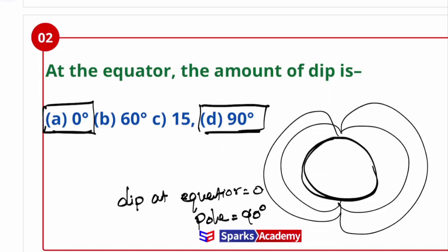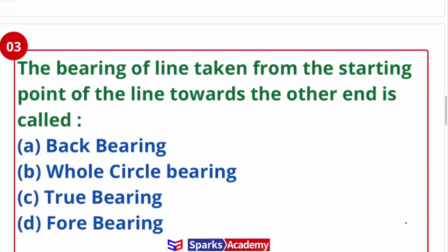Next question: The bearing of a line taken from the starting point of the line towards the other end is called what? So if you have a line AB, starting point A, ending point B, the bearing from the starting point towards the other end is called forward bearing. If you measure in the backward direction, that is called back bearing. The correct answer is forward bearing.